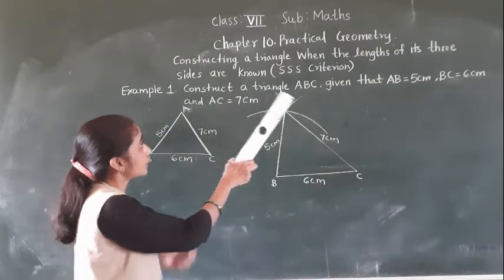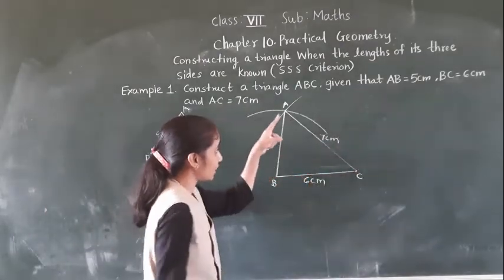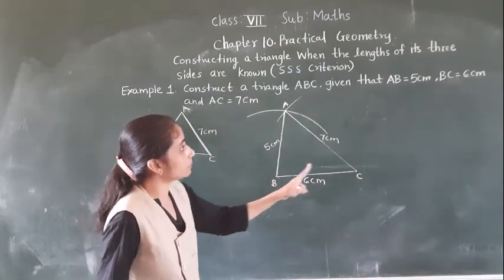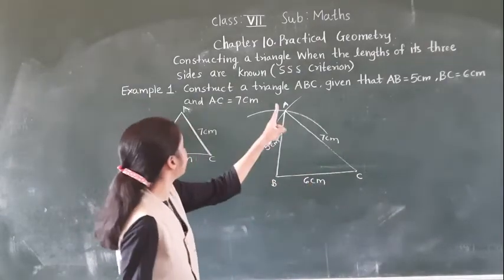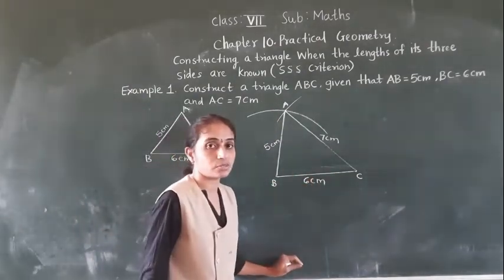Consider the triangle ABC — AB is 5 cm, BC is 6 cm, and AC is 7 cm. Let's solve exercise 10.2, question number 1.